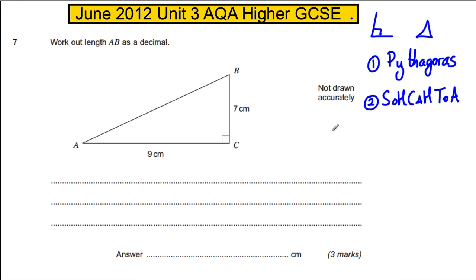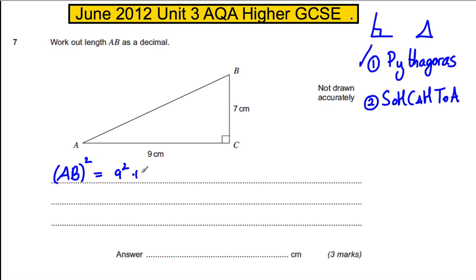Pythagoras is the one that turns out to be in play because you've got nothing about angles here — you've got two sides and you're working out the hypotenuse. So label everything and make sure you explain your working. AB squared must be equal to 9 squared plus 7 squared, which when you work out in your calculator is 81 plus 49, which is 130.